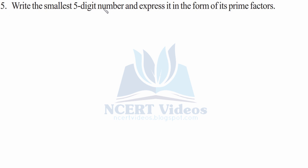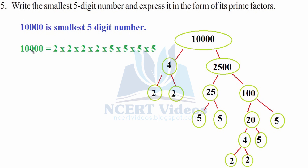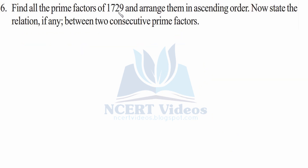Question 5: Write the smallest five-digit number and express it in the form of its prime factors. The smallest five-digit number is 10,000. It can be written as 2 to the power of 4 times 5 to the power of 4. The factor tree shows 10,000 = 4 × 2500 = (2 × 2) × (25 × 100), with four 2s and four 5s as the root nodes.